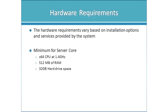Server Core installation is now the default — it does not include a GUI and has a smaller footprint, requiring a 64-bit CPU at 1.4 GHz, at least 512 MB of RAM, and at least 32 gigabytes of hard drive space. However, you still need to plan based on what that server will do in the environment to ensure it has adequate resources.